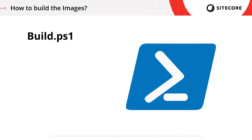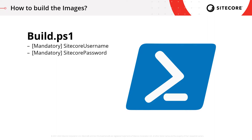The first two parameters are your Sitecore username and password for dev.sitecore, which you use to download the software itself. When you first execute the script, it's going to go off and download all the packages it needs to build the images you specified. These are also the only two mandatory parameters required to execute this script.